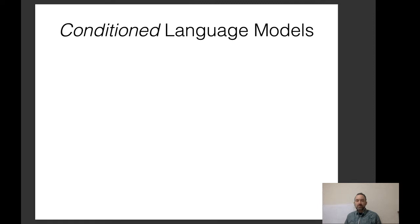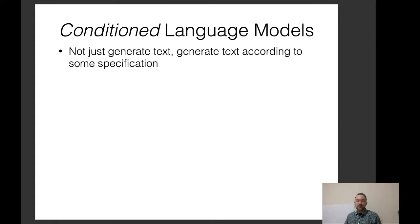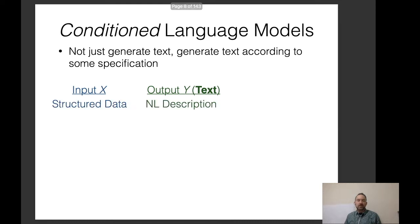Perhaps more interesting are conditioned language models, which are essentially not just generating text randomly, but generating text according to some specification. We have our input X and our output Y, where the output Y is text. For example, the input X could be some sort of structured data and the output could be a natural language description. Or the input could be one language like English and the output another like Japanese.